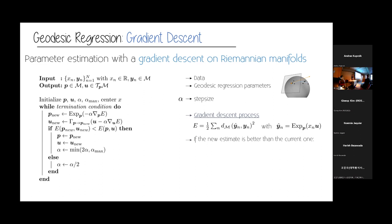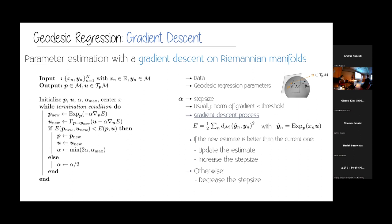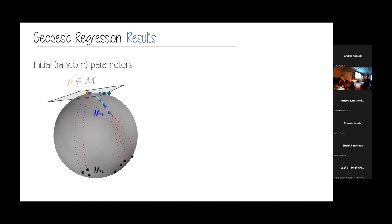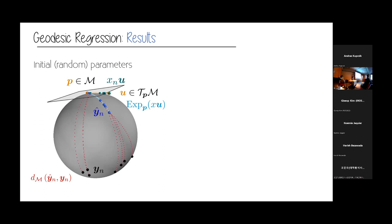Those are the main steps needed to implement geodesic regression. Looking at this on the sphere: the black dots are the points we want to fit, the red dashed lines show geodesic distances being measured, and the initialization of p and u gives us huge errors initially. After optimization, we get a very beautiful geodesic fit to the data, with optimal p and u. This converges relatively quickly.